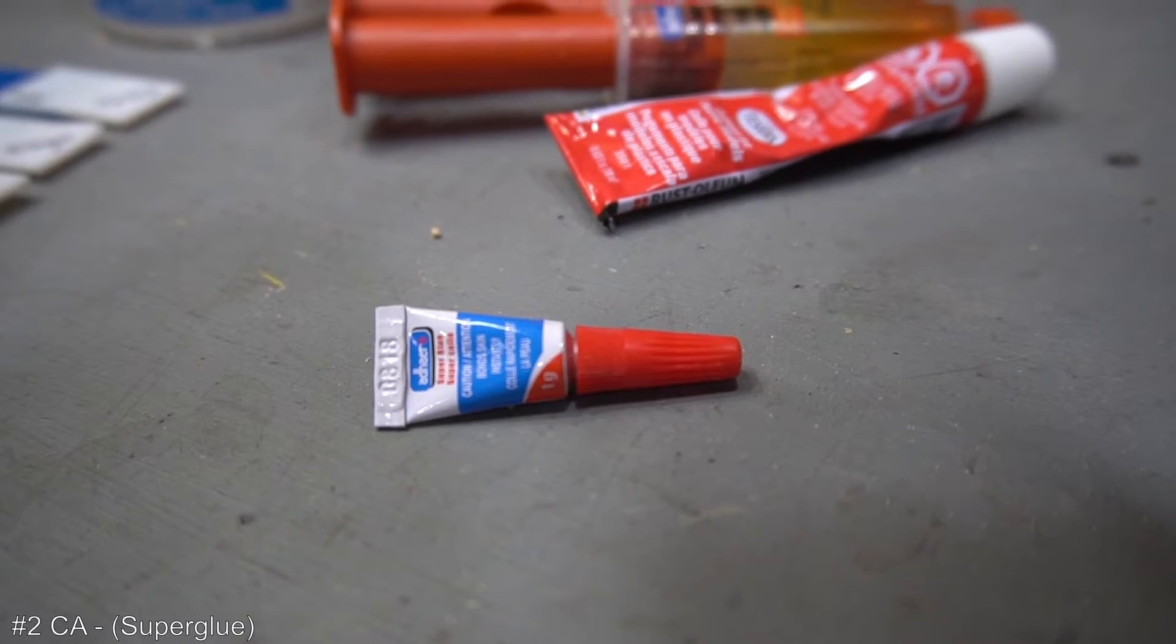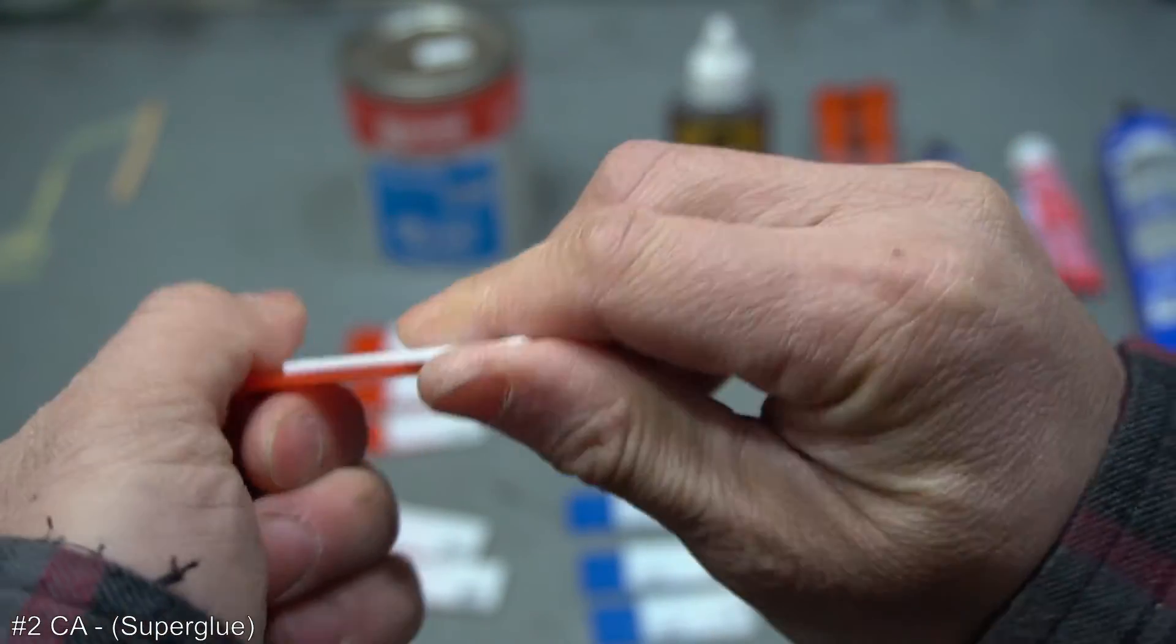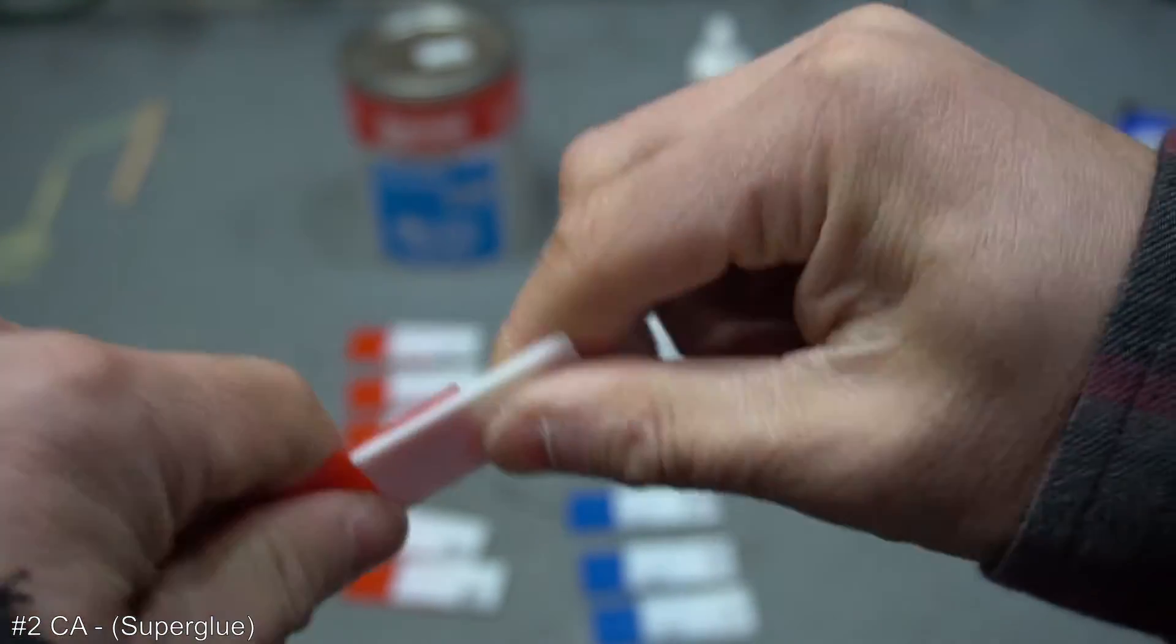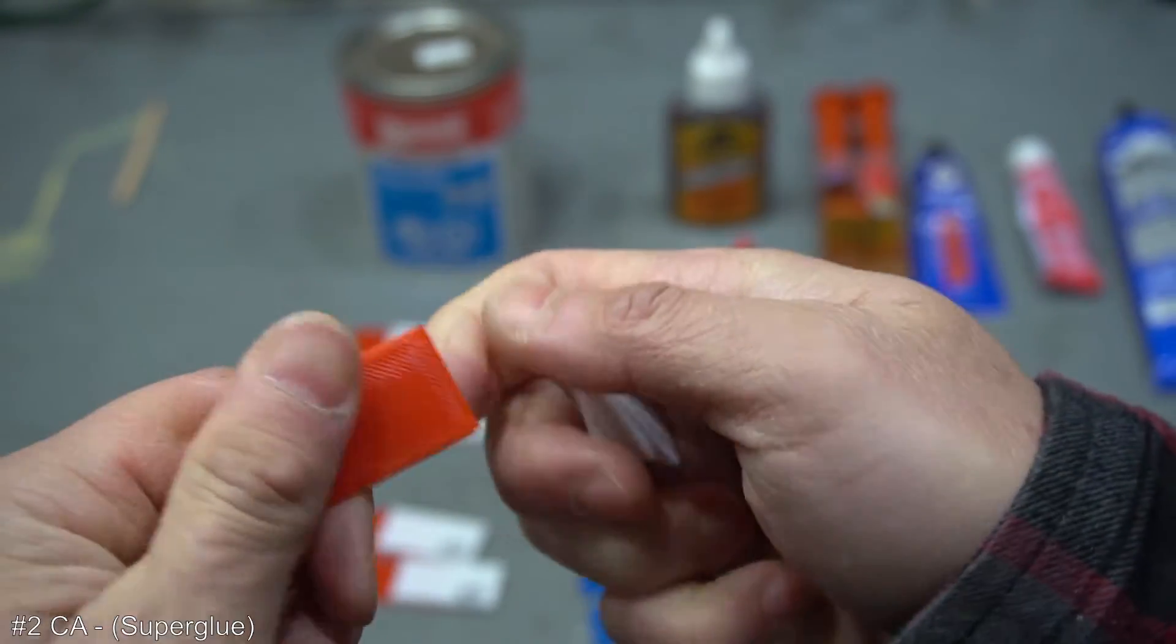In second place, I would rate CA, super glue, slightly better than contact cement. But really, they were both about the same strength, and I really had to apply lots of pressure and twisting with the PLA breaking first and not the glue.